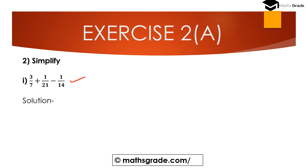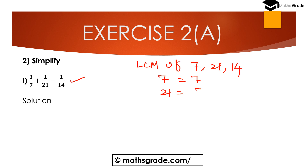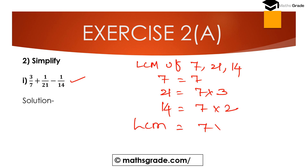First find out the LCM of 7, 21, and 14. 7 is 7 multiplied with 3, and 14 is 7 multiplied with 2. So LCM will be 7 multiplied with 3 multiplied with 2, which is 42. So LCM is 42.